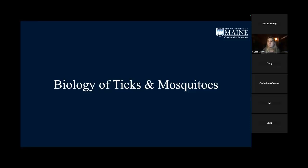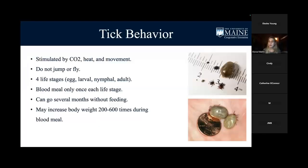Now we're going to go over the biology of ticks and mosquitoes. A bit about tick behavior: they're attracted to CO2 — what we breathe — as well as heat and movement. If an animal is walking in the woods, the tick actively tries to seek it out by questing. Ticks do not fly or jump; they're pretty slow. The Lone Star tick is a bit faster, but typically they just quest. They have four life stages: egg, larvae, nymph, and adult.